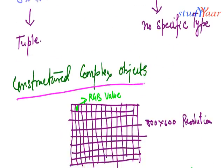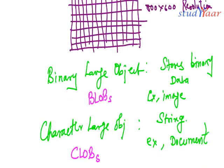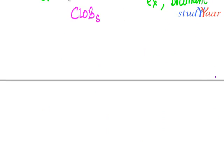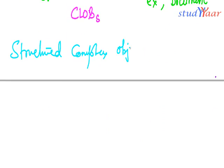These binary large objects are also called BLOBs and these character large objects are also called CLOBs. So that was about unstructured complex objects. Now we are going to take a look at structured complex objects — how they are composed and how they are represented. Let's suppose I have a tuple of a department object.